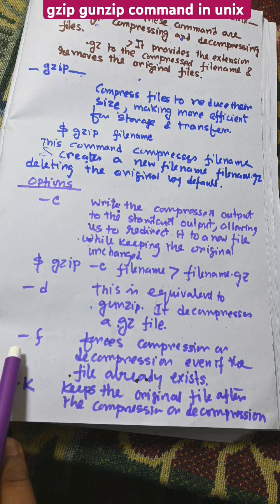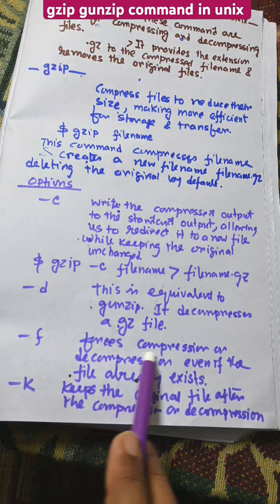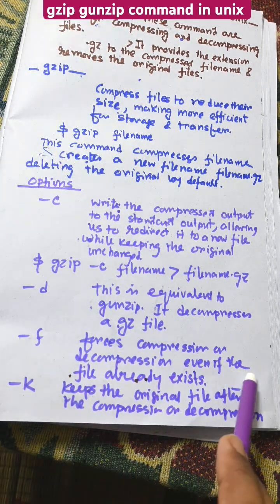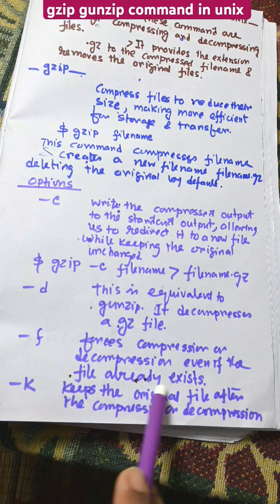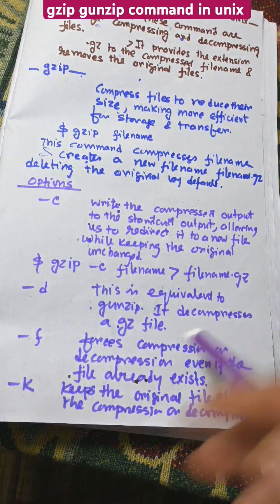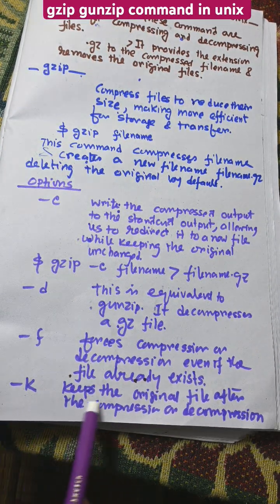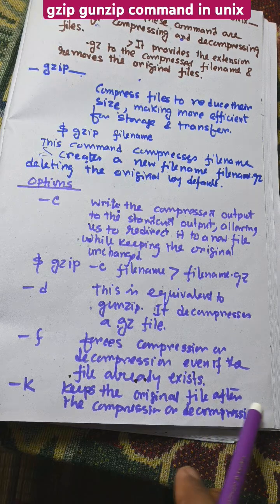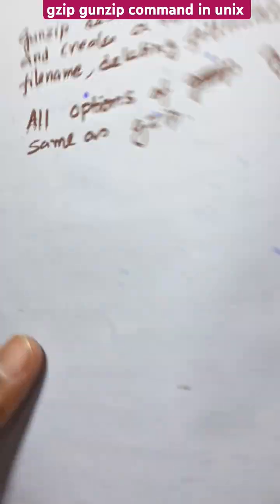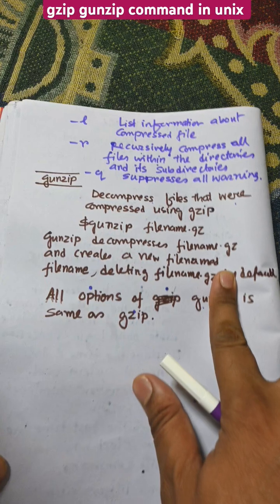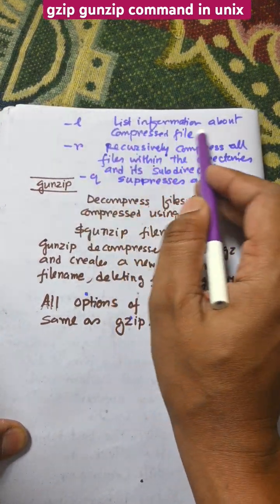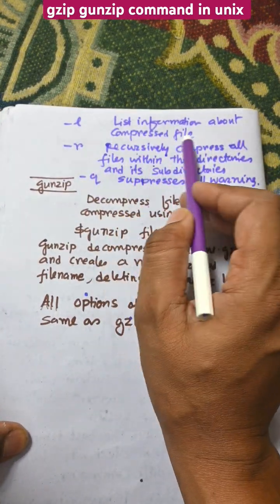Next, `gzip -f` forces the compression or decompression even if the file already exists — it will force the compression and decompression. `-k` keeps the original file after compression or decompression, so it will keep the original file.